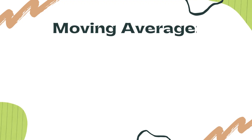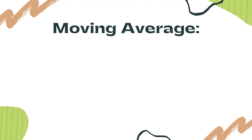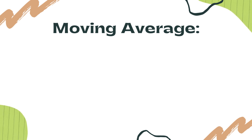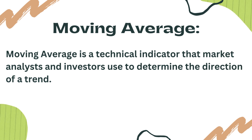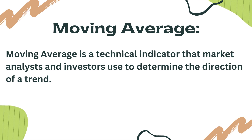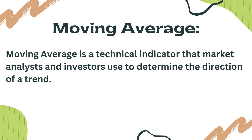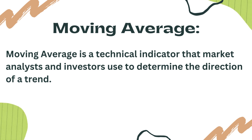Hi, in this video we will learn about moving average indicators and how they can be used as technical indicators with simple examples. Moving average is a technical indicator that market analysts and investors use to determine the direction of a trend.